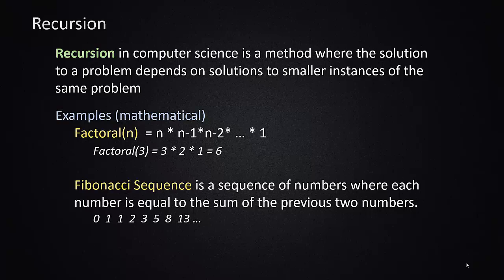Each time through, you're recalling the same definition on a subset or smaller instance of the original problem. Another example is the Fibonacci sequence, where each number is the sum of the previous two. The Fibonacci of the 5th term is actually the sum of the Fibonacci sequence for the 4th term and the 3rd term. So each latter stage depends on calculating a simpler version of the same thing.